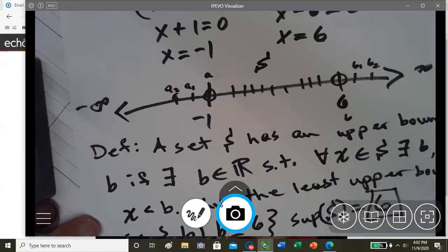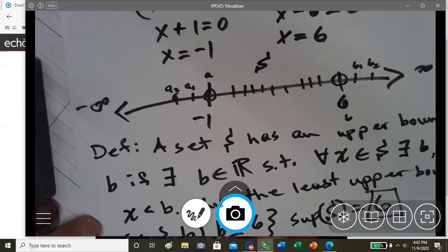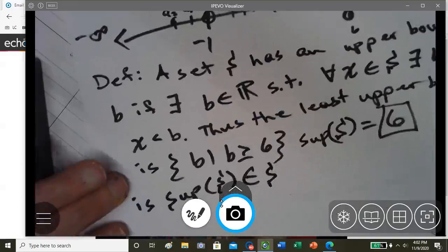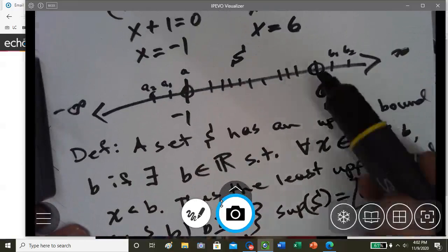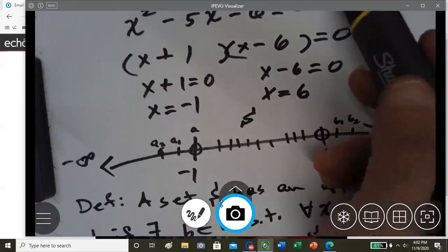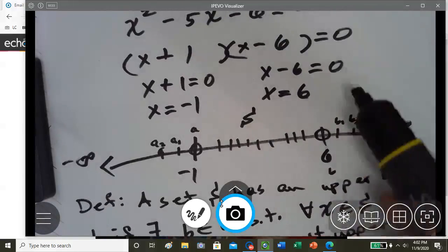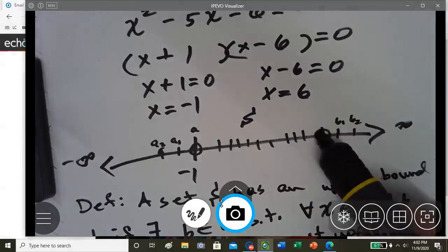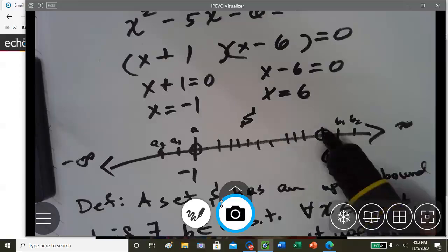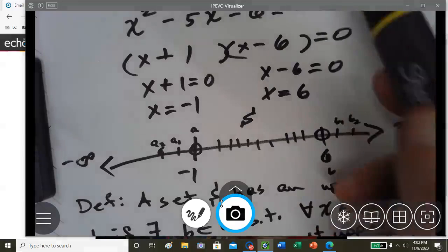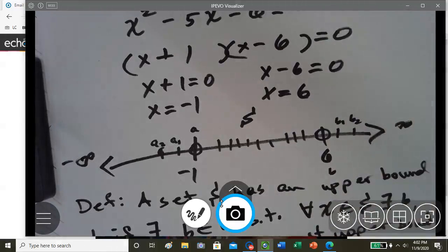And we want to know is the supremum for set S an element of set S. Well, because it's open, because it's less than, it's going to be open. So 6 is not a part of set S because it's open, because it's less than and not less than or equal to. So the answer to that is no.